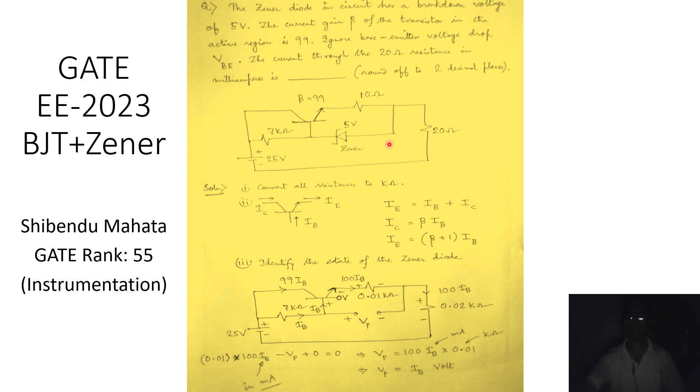For any zener diode circuit with a DC supply, we must identify whether the zener diode has actually gone into its reverse conduction mode. If the voltage drop across the zener diode in reverse bias is less than its zener breakdown voltage, the diode remains off or open. The method is to first open-circuit the zener diode from the circuit and then find the voltage drop across its cathode and anode terminals.